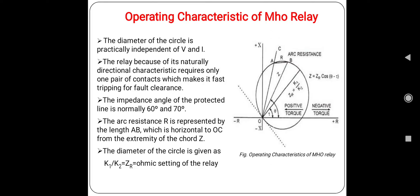It is a fact that the circle passes through the origin, which makes the relay inherently directional. The relay, because of its inherently directional characteristics, needs only one pair of contacts which makes it fast tripping for fault clearance and reduces the VA burden on the current transformers.